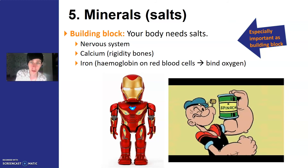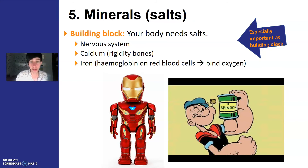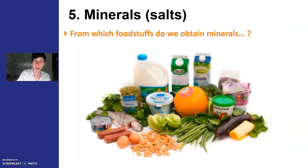Minerals are also an important building block. Your body needs salts for your nervous system to function — your brain actually needs them to think. Calcium is really important: it's a sort of salt, and it makes sure you have strong bones. Iron is used to form hemoglobin on red blood cells so you can bind oxygen — so you're a bit of an Iron Man! Spinach, as seen in the Popeye cartoon, doesn't actually give you muscles, but it is a very good source of iron, which is important for binding oxygen. Minerals can be obtained from meat, fish, and many vegetables — so eat your veggies.